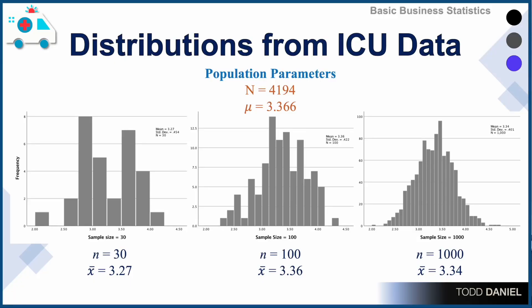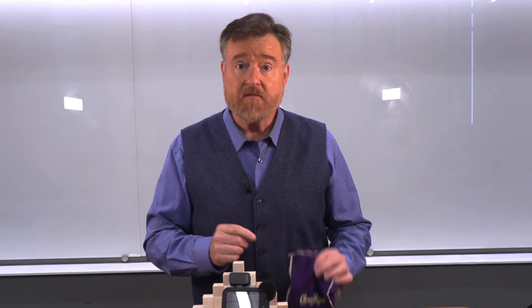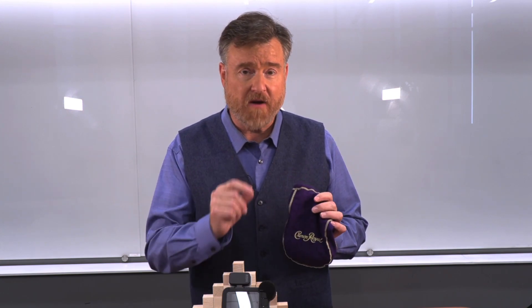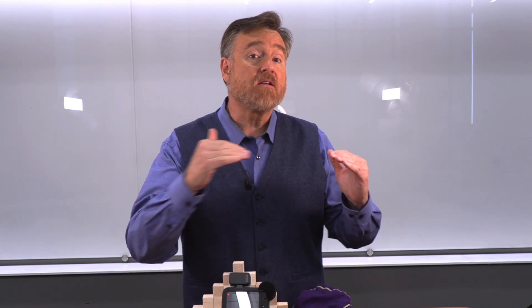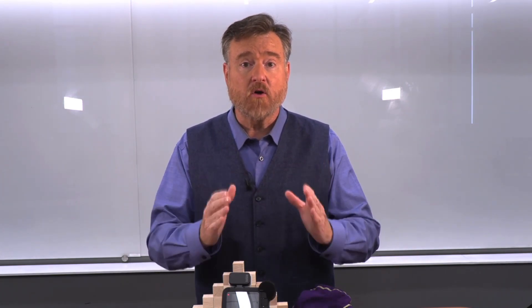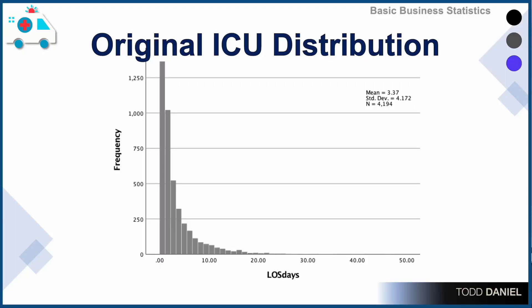Let's review those three distributions of sample means from our original ICU data. We can see that as we increase the sample size, the distribution of sample means becomes more normal. But now I want to show you the shape of the infinite population from which we have been sampling. Are you ready? The population that we were sampling looks like this.